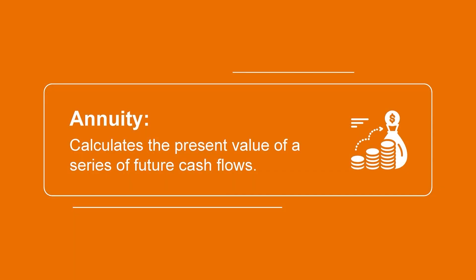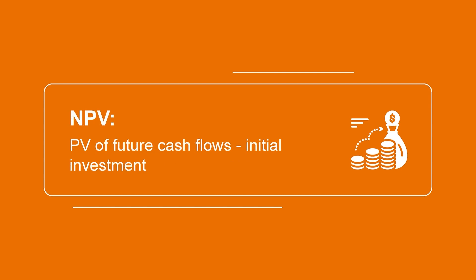When companies are making investment decisions, such as deciding whether to buy a new piece of equipment, they may need to calculate the present value of a series of future cash flows called an annuity. Sometimes these cash flows are uneven as they'll differ each year. In this case, they would need to calculate the present value of each individual future cash flow and then add them together to get the total present value of the cash flows expected from this investment. By subtracting out the original investment from this total, we can determine the net present value of this investment, which is another useful tool to evaluate investment decisions.